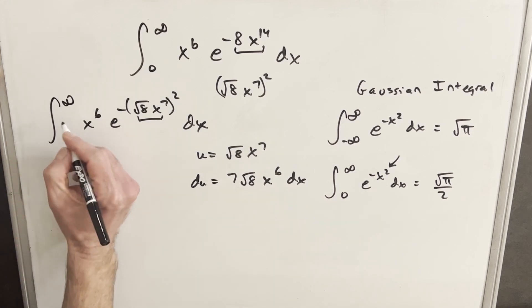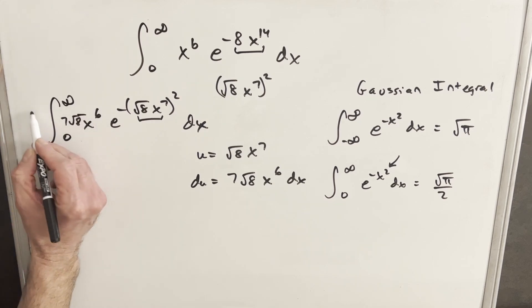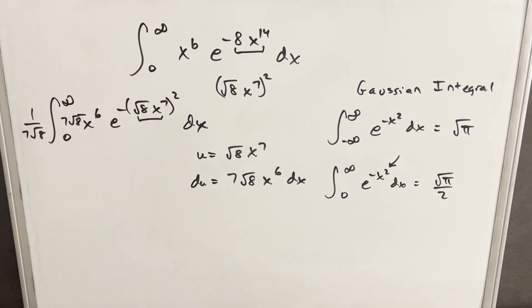Okay, so not bad, let's just kind of create this 7 square root of 8, just kind of write that in small, but then we'll have to divide by it as well. And now let's just make our substitution.